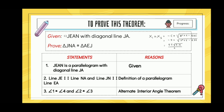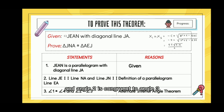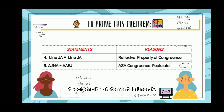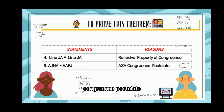Second statement: line JE is parallel to line NA and line JN is parallel to line EA. The reason is the definition of a parallelogram. Third statement: angle 1 is congruent to angle 4 and angle 2 is congruent to angle 3. The reason is the alternate interior angle theorem. Fourth statement: line JA is congruent to line JA. The reason is the reflexive property of congruence. Last statement: triangle JNA is congruent to triangle AEJ. The reason is ASA congruence postulate, which stands for angle-side-angle.